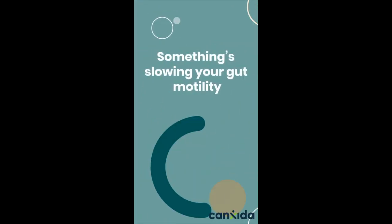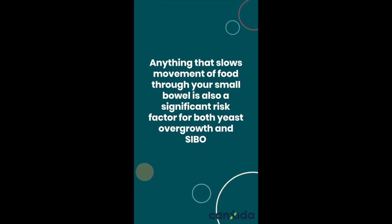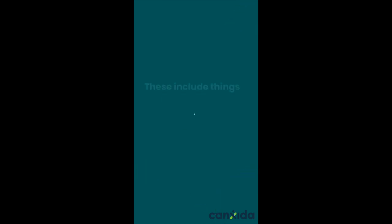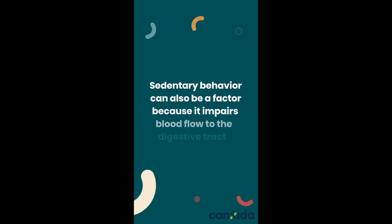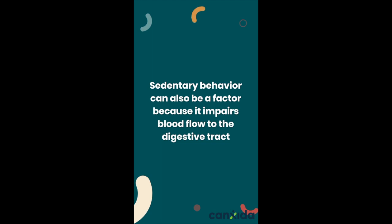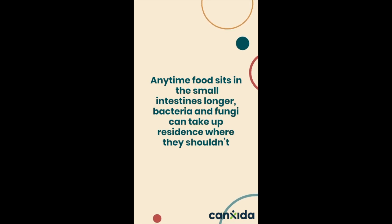Something slowing your gut motility. Anything that slows moving food through your small bowel is also a significant risk factor for both yeast overgrowth and SIBO. This includes things like diabetes, certain medications, GERD, and lack of fiber in the diet. Sedentary behavior can also be a factor because it impairs blood flow to the digestive tract. Anytime food sits in the small intestines longer, bacteria and fungi can take up residence where they shouldn't.